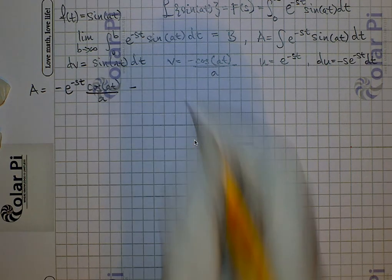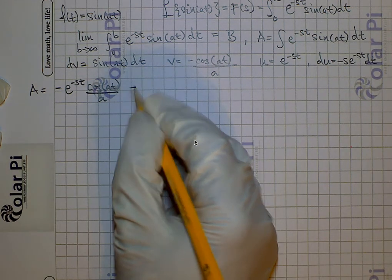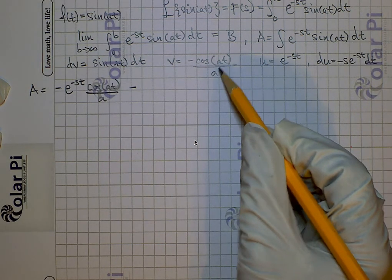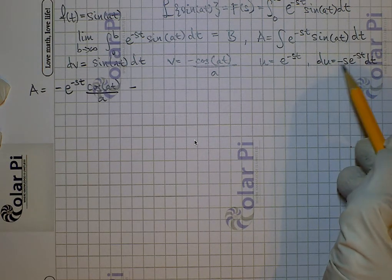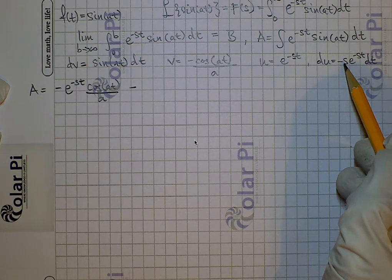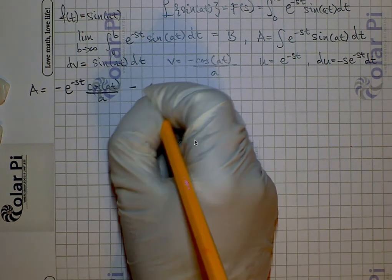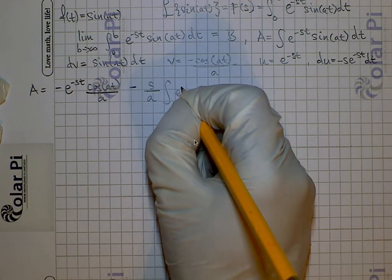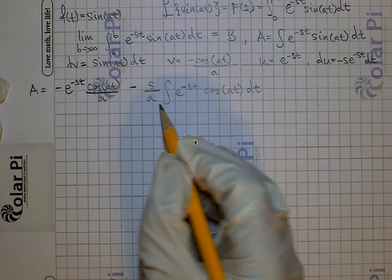That's uv minus the integral of v du. Now v and du come with a negative, so that takes care of itself and we keep this minus sign from the integration by parts formula. Notice that v gives a constant a in the denominator and du gives a constant s in the numerator of what we're about to write, so we can factor out s over a. So I write s over a here and then the integral of e to the negative st times cosine of at dt.